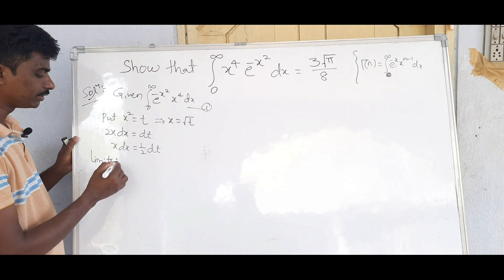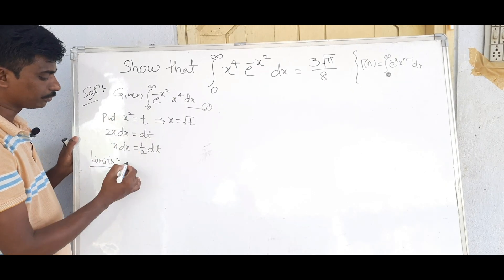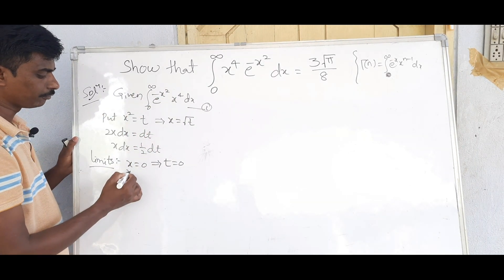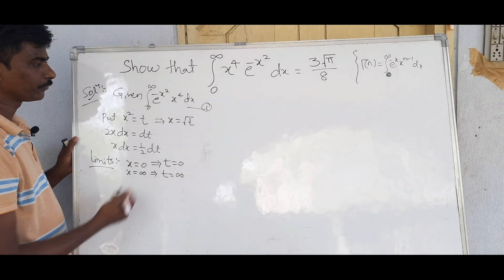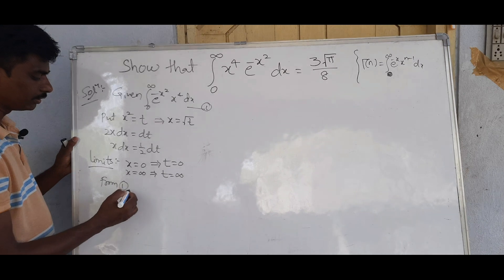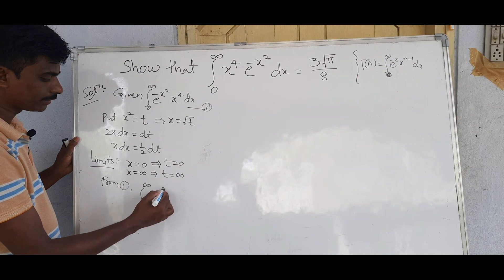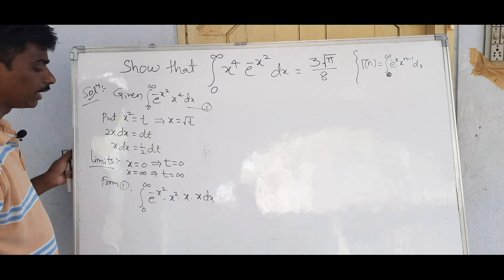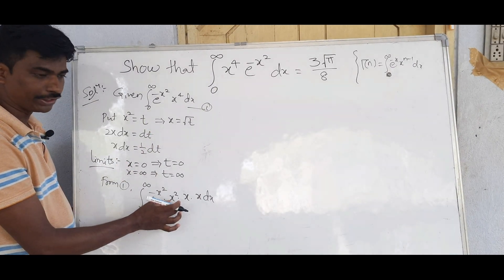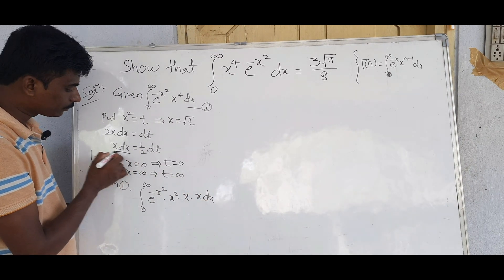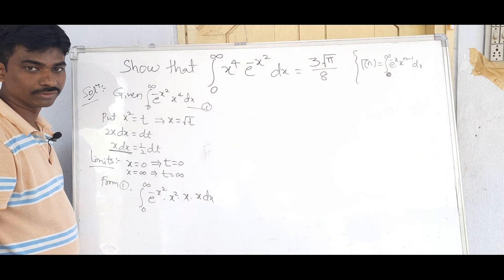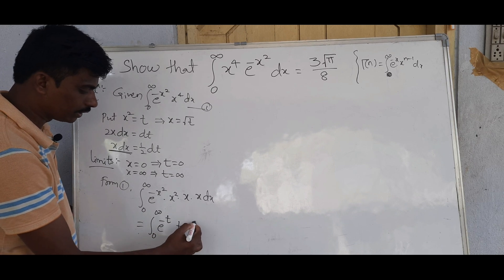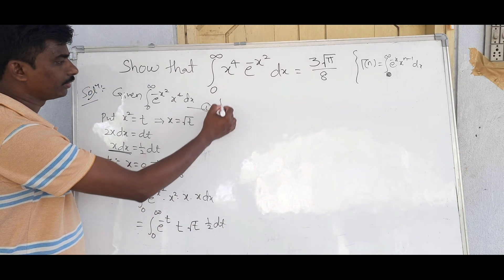Let's check the limits. When x = 0, t = 0. The upper limit: when x = infinity, t = infinity. From Equation 1, we write e^(−x²) · x² · x dx. Since x² = t, x = √t, and x dx = (1/2) dt, the integral becomes the integral from 0 to infinity of e^(−t) · t · √t · (1/2) dt.